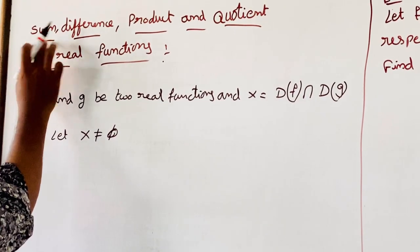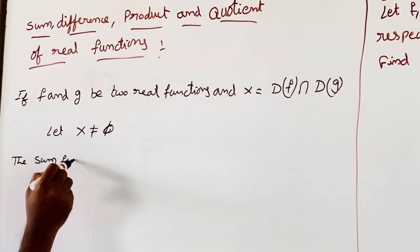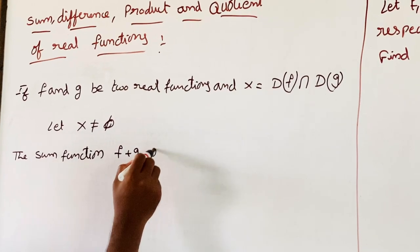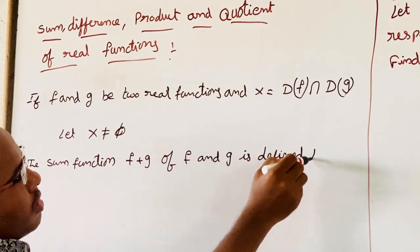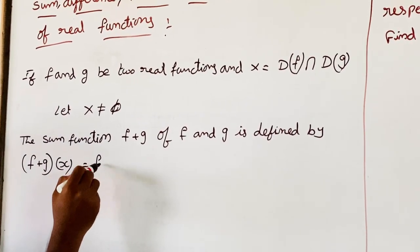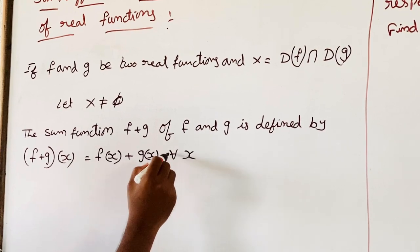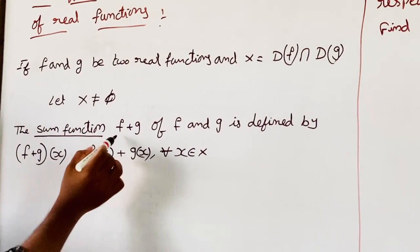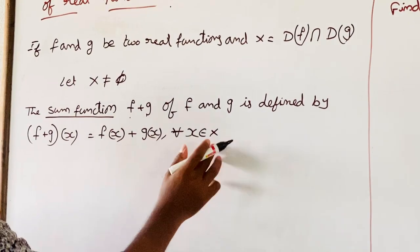Then, the sum function: the sum function F plus G is defined by F plus G of X is equal to F of X plus G of X, for all X belonging to X.